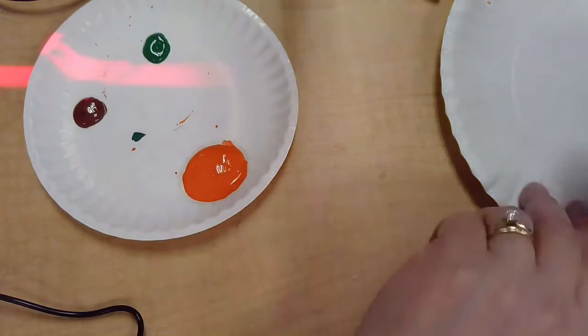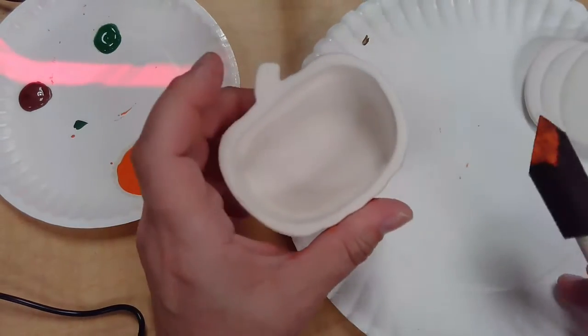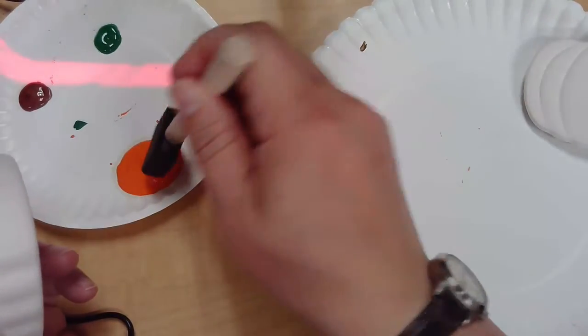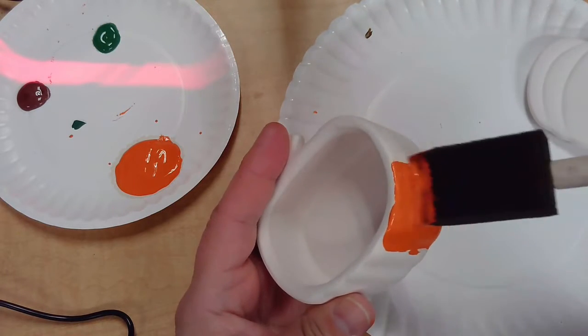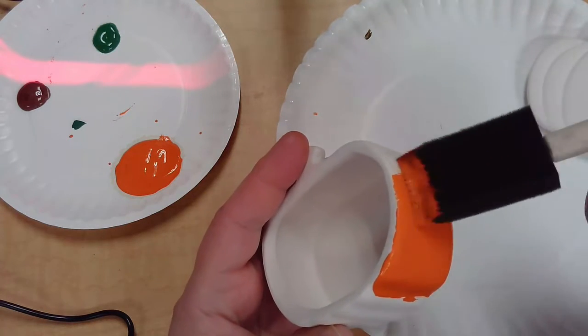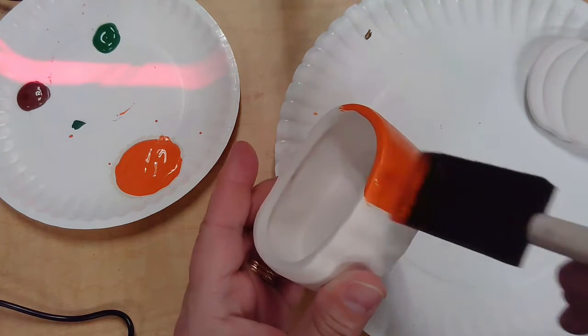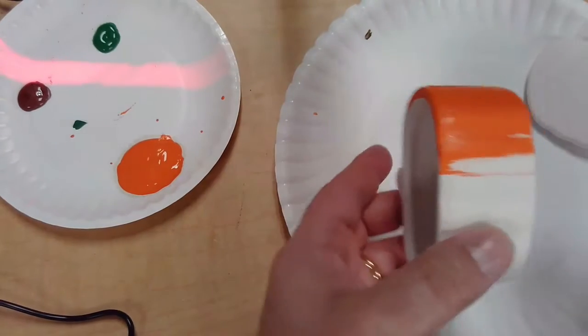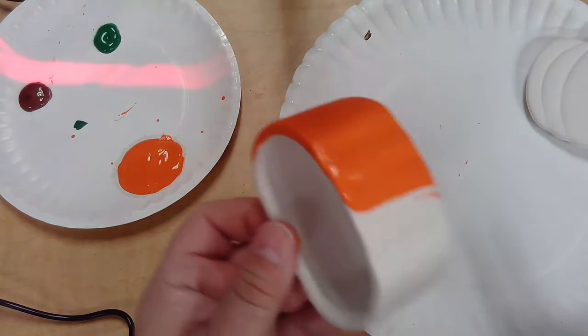Now this ceramic absorbs paint very quickly. So it dries pretty quickly and you'll be able to complete this thing pretty fast. And you should have enough paint to do two layers if you want to. So just using nice even strokes, putting in the orange.